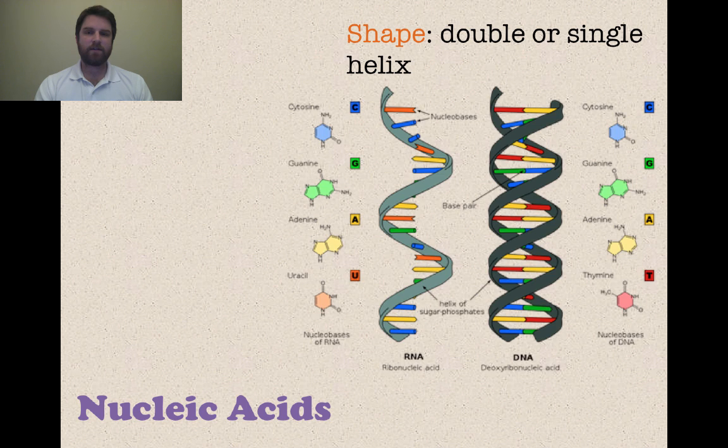So let's look at the shape here. You know that DNA is a double helix. RNA is a single helix. So you can see right there, you have the four different bases that make up DNA and RNA. And you can see the double helix shape right there.